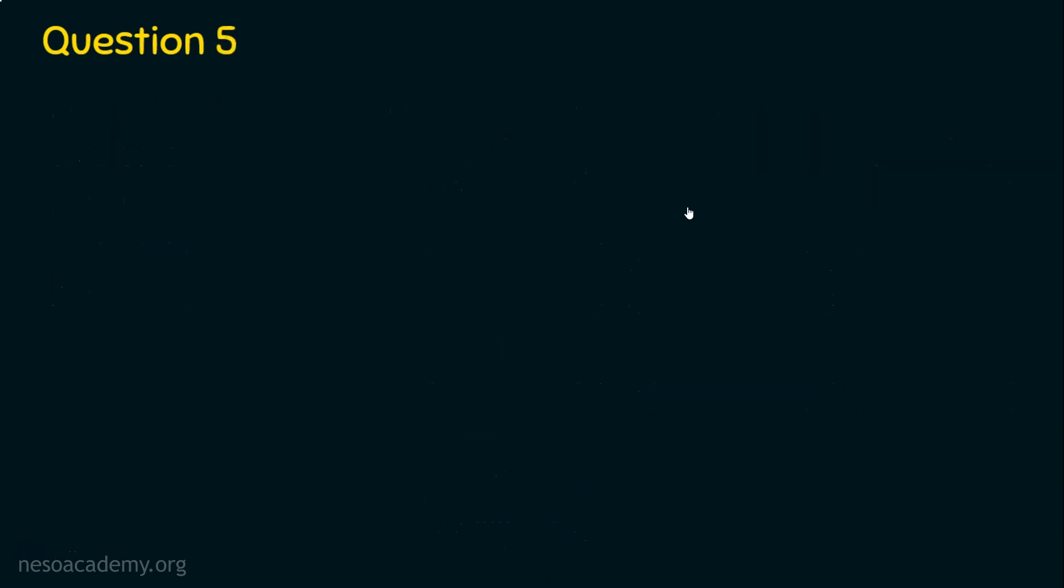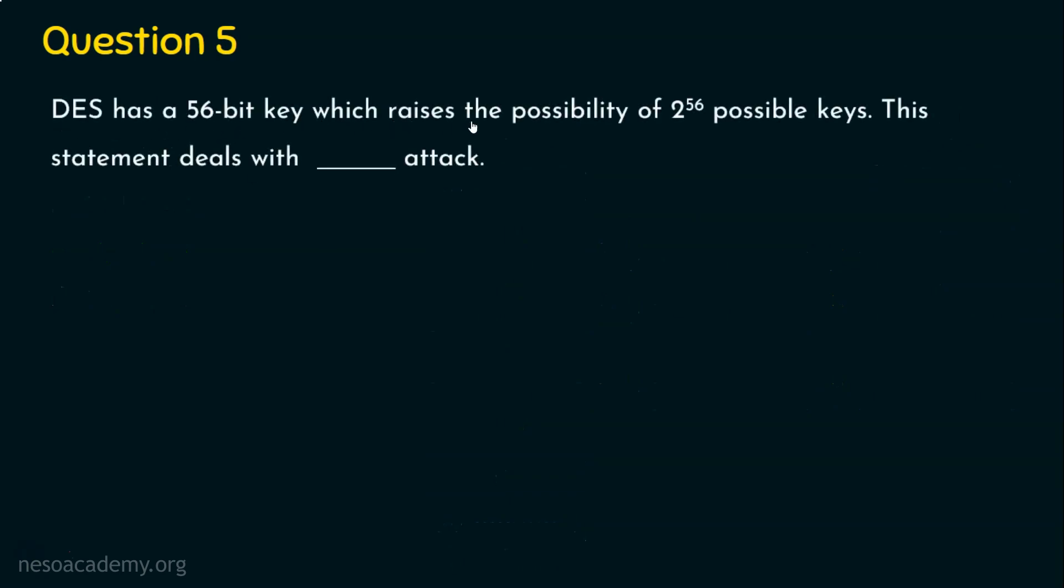Let's now see the last question. The question is DES has a 56 bit key which raises the possibility of 2 power 56 possible keys. I told you in the previous question that the effective key size of DES is 56 bits. So, 56 bits in binary, obviously how many possibilities are there? 2 power 56 possible keys are there. And this statement deals with dash attack. The options are given. Option A, timing attack. Option B, mathematical attack. Option C, brute force attack. Option D, DOS, DOS attack, the denial of service attack. The answer is option C, brute force attack. Because we are going to search the entire key space. If the key size or the effective key size is of 56 bits in DES, then all possible key values will be 2 power 56. We have a key space of 2 power 56. And when we attempt to break the DES encryption algorithm to find the key for 2 power 56 possible keys, then it is a brute force attack.